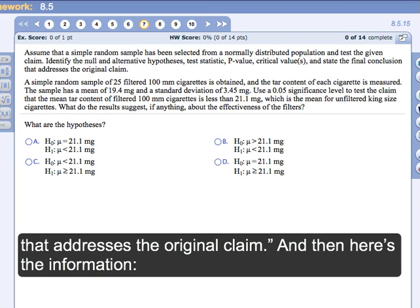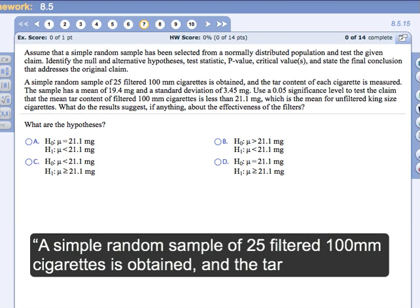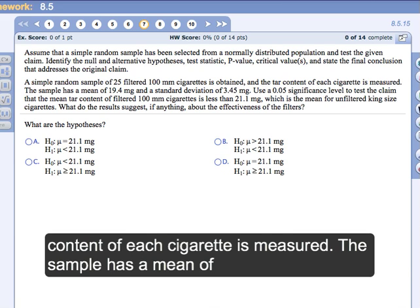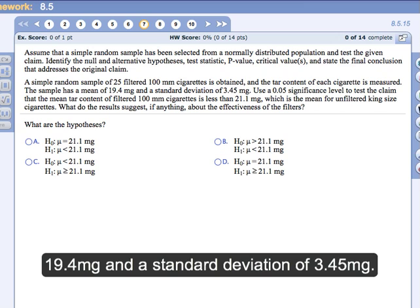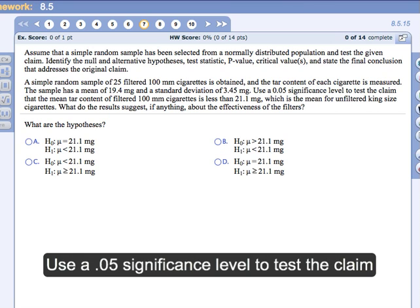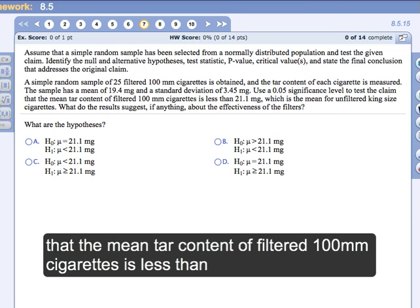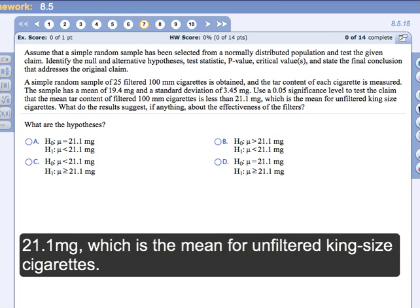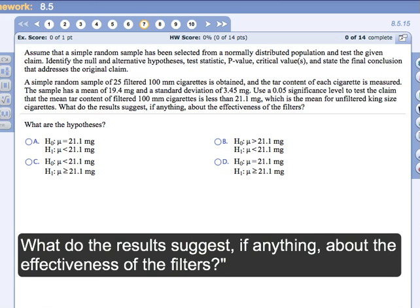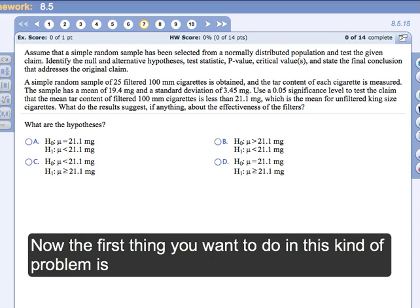Here's the information. A simple random sample of 25 filtered 100 mm cigarettes is obtained and the tar content of each cigarette is measured. The sample has a mean of 19.4 mg and a standard deviation of 3.45 mg. Use a 0.05 significance level to test the claim that the mean tar content of filtered 100 mm cigarettes is less than 21.1 mg, which is the mean for unfiltered king-size cigarettes. What do the results suggest, if anything, about the effectiveness of the filters?